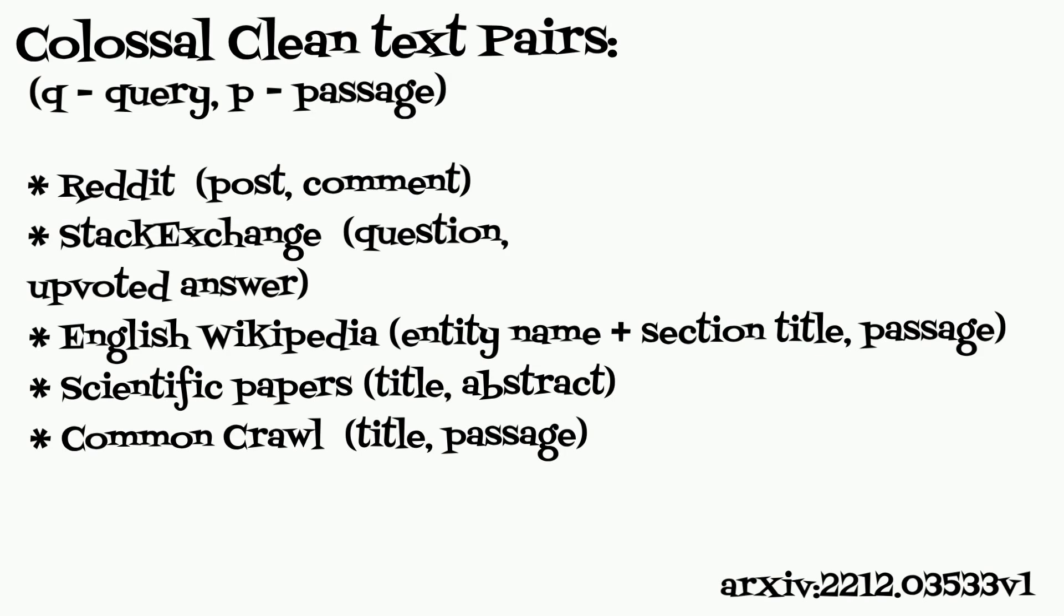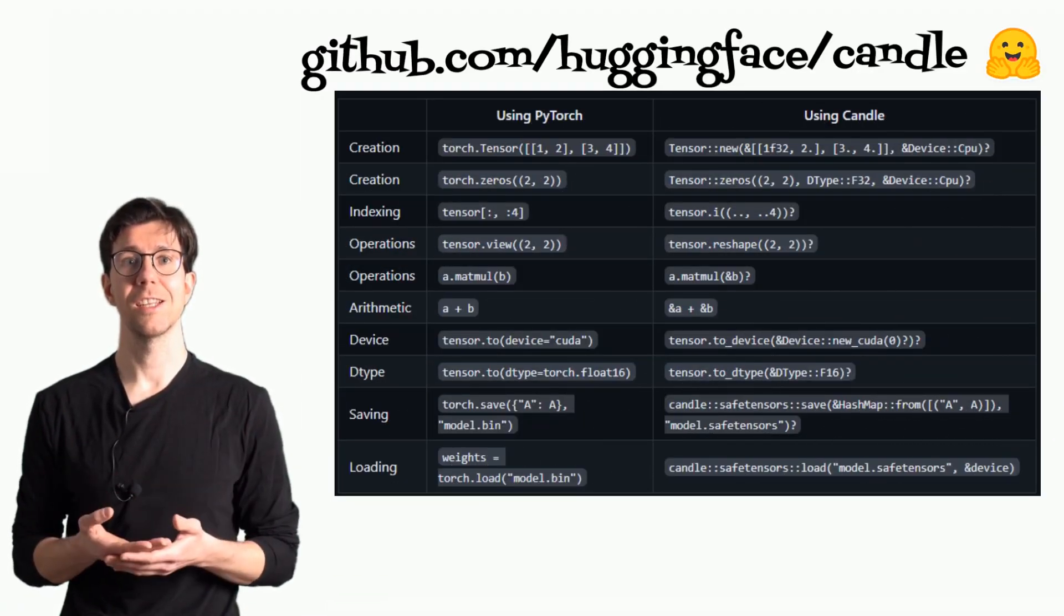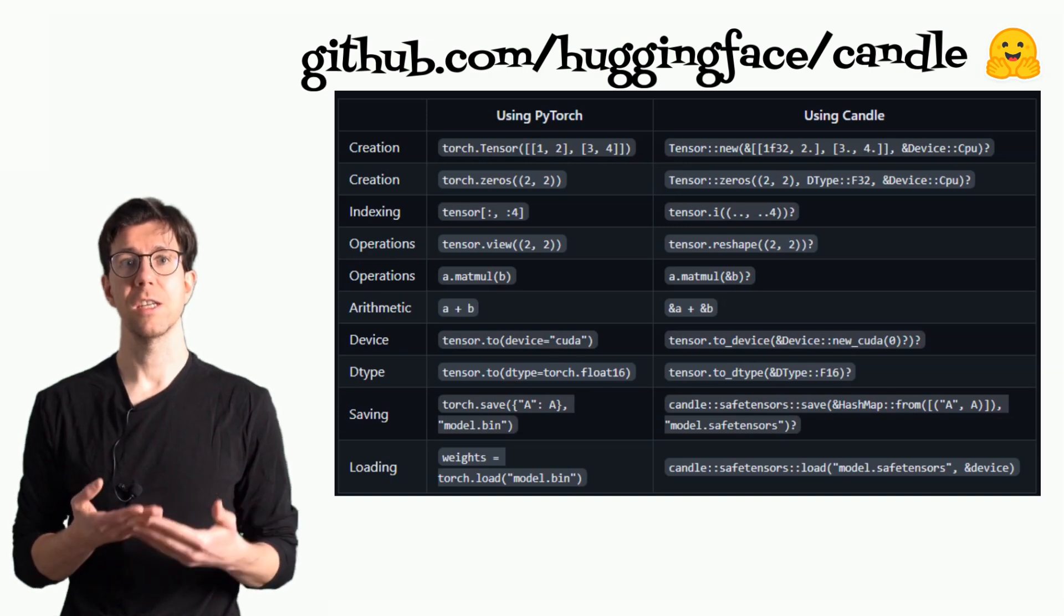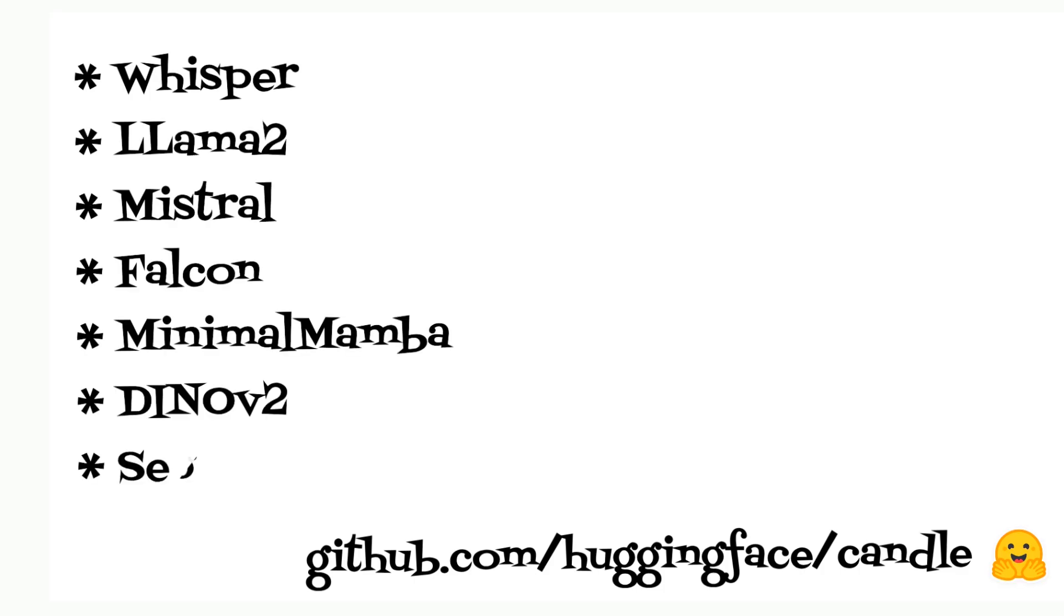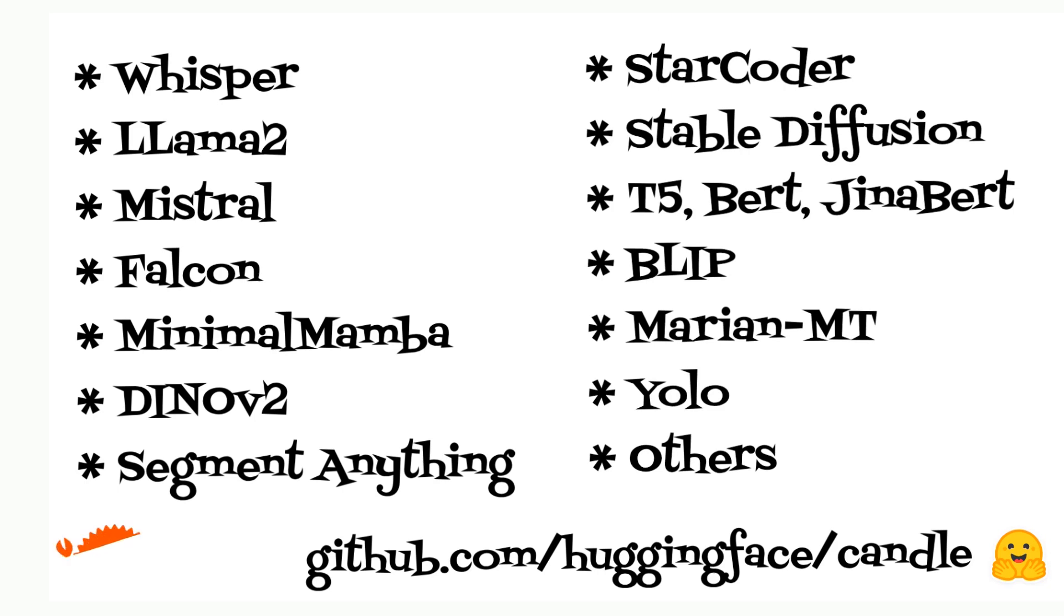To run the E5 model I will use the Candle ML framework written in Rust. Candle supports a wide range of ML models including Whisper, Llama, Mistral, Stable Diffusion and others.